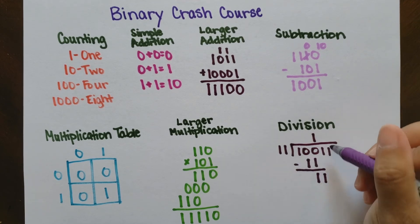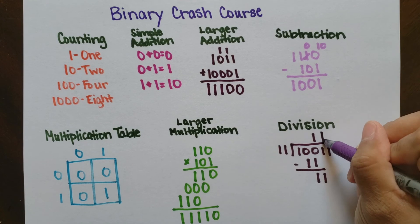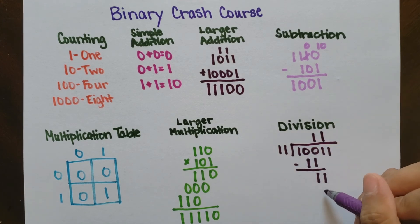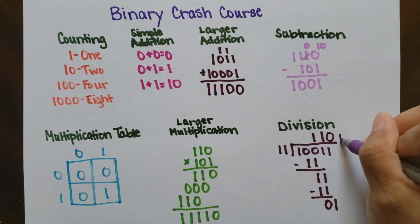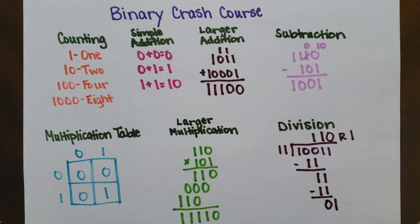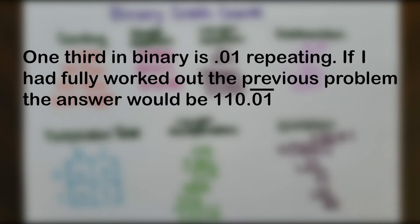Now 11 obviously fits into 11 a single time, so I write 1 above that row. And when I subtract 11, I'm left with 0. I bring down the final 1, and I cannot fit anything else in here, so I write 0, remainder 1. If I wanted to, I could make this a decimal number, because what we really have is 110 and 1 third, or 110.01 repeating.